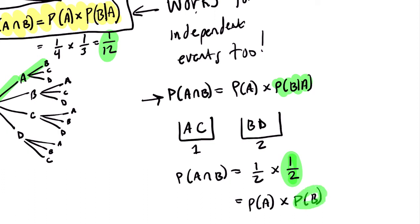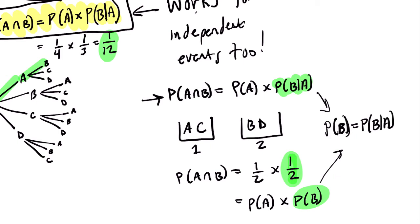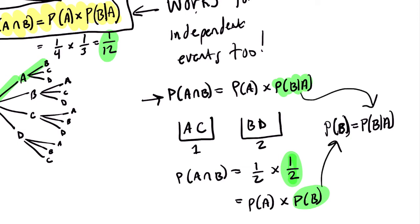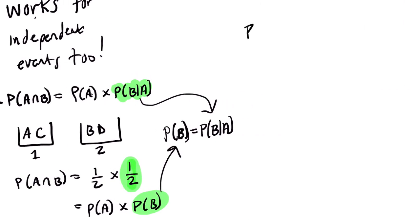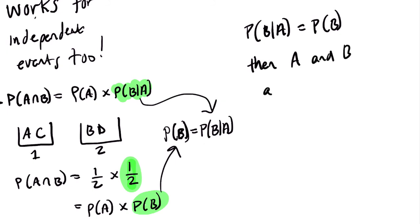One of the tests for independence is that the probability of B is the same as the probability of B given A. That's just a mathematical way of saying the probability of B is the same whether A has occurred or not. So whether you consider P(B) on its own or P(B|A), you get the same thing — and that is the definition of independence. They're independent literally because event A happening has no impact on the value of P(B).